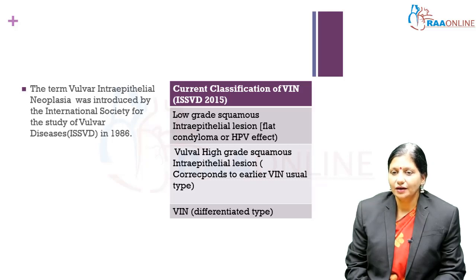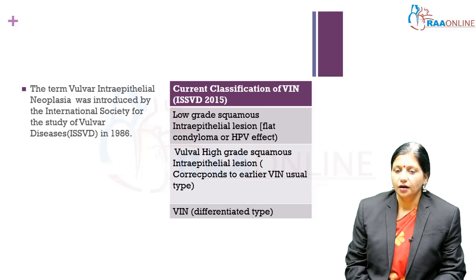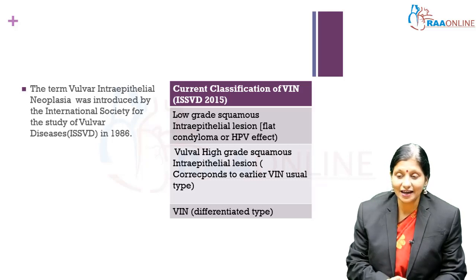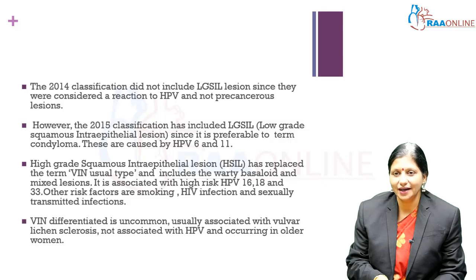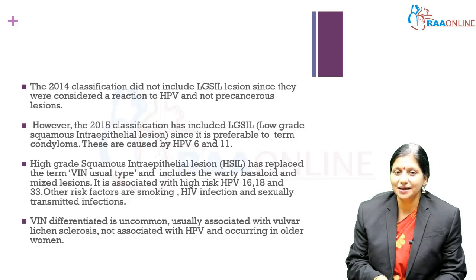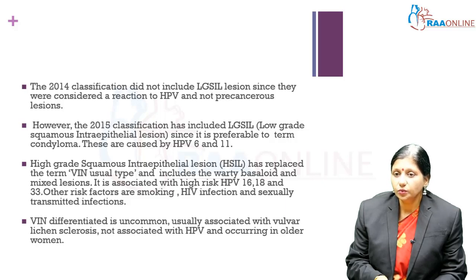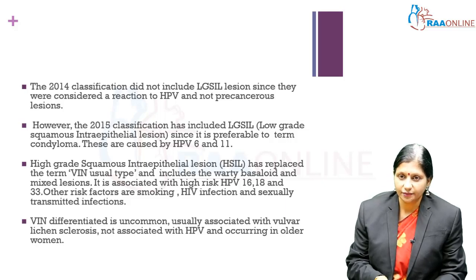The vulvar high grade squamous intraepithelial lesion corresponds to the earlier VIN usual type. The third variety in this new classification is VIN differentiated type. The 2014 classification did not include low grade SIL lesions because they were considered a reaction to human papilloma virus and not precancerous. The revised classification included low grade squamous intraepithelial lesions — condylomas associated with non-oncogenic HPV types.